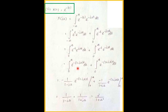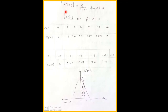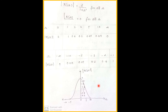After integrating, the answer is X(jω) = 2/(1 + ω²). The magnitude |X(jω)| = 2/(1 + ω²) and the phase ∠X(jω) = 0. Since the phase is zero, the phase spectrum is not applicable. For various values of ω we calculate |X(jω)| and draw the amplitude spectrum.